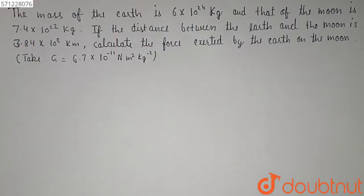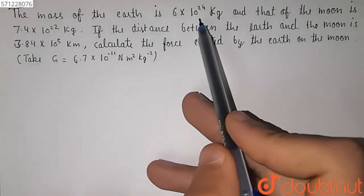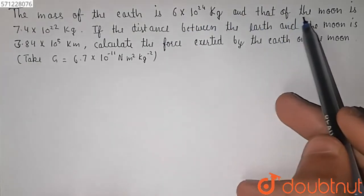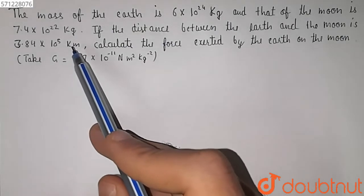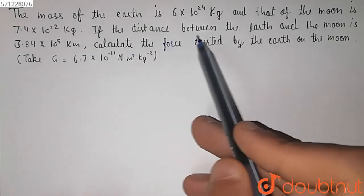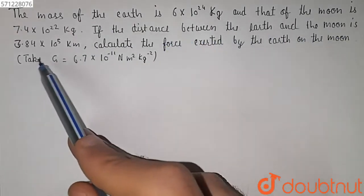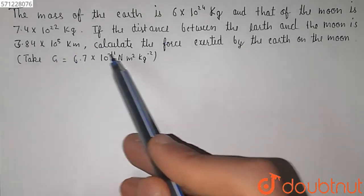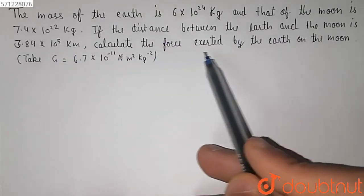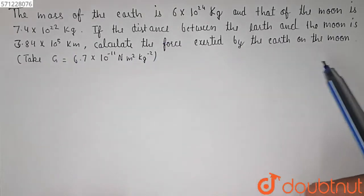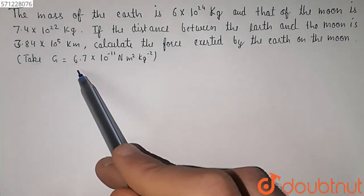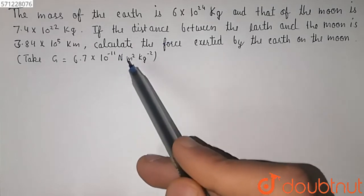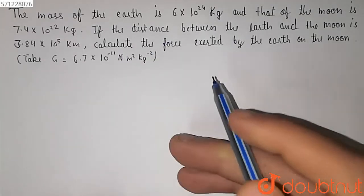In this question we have given the mass of the Earth is 6 x 10 raised to power 24 kg, and that of the Moon is 7.4 x 10 raised to power 22 kg. The distance between the Earth and the Moon is 3.84 x 10 raised to power 5 kilometers. We have to calculate the force exerted by the Earth on the Moon, and the value of the gravitational constant is 6.7 x 10 raised to power minus 11 newton meter square kg inverse square.